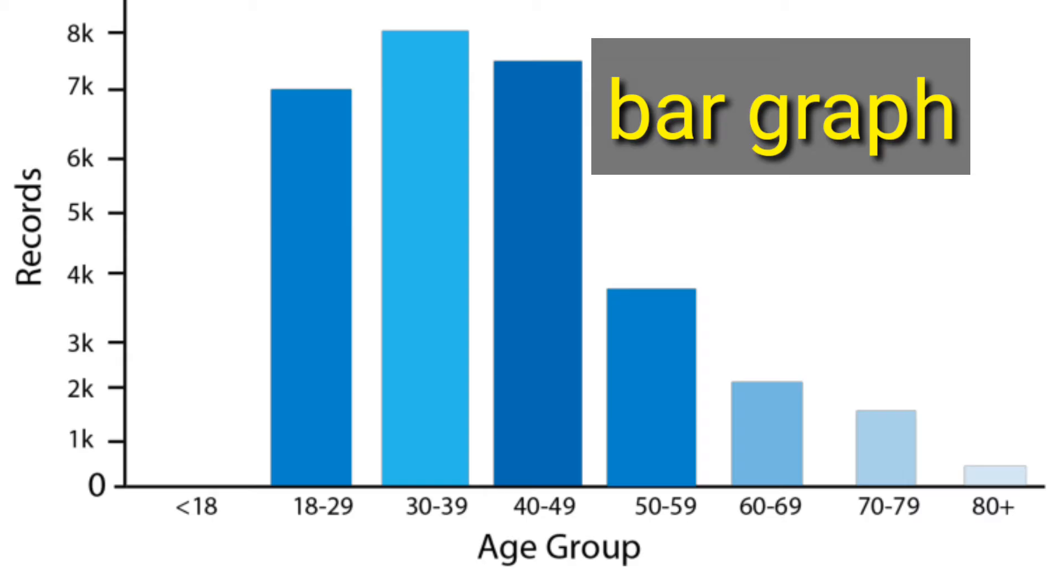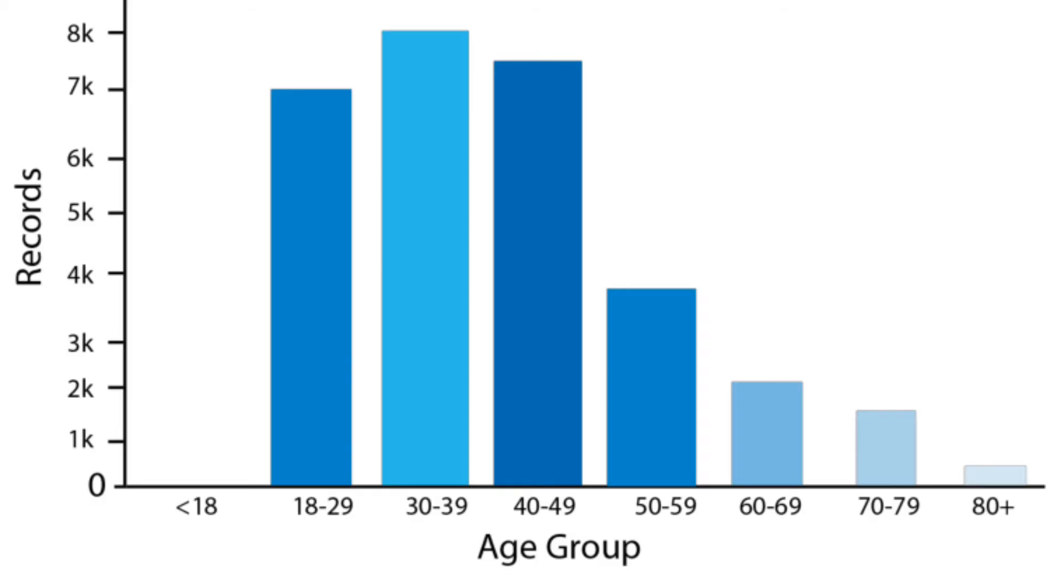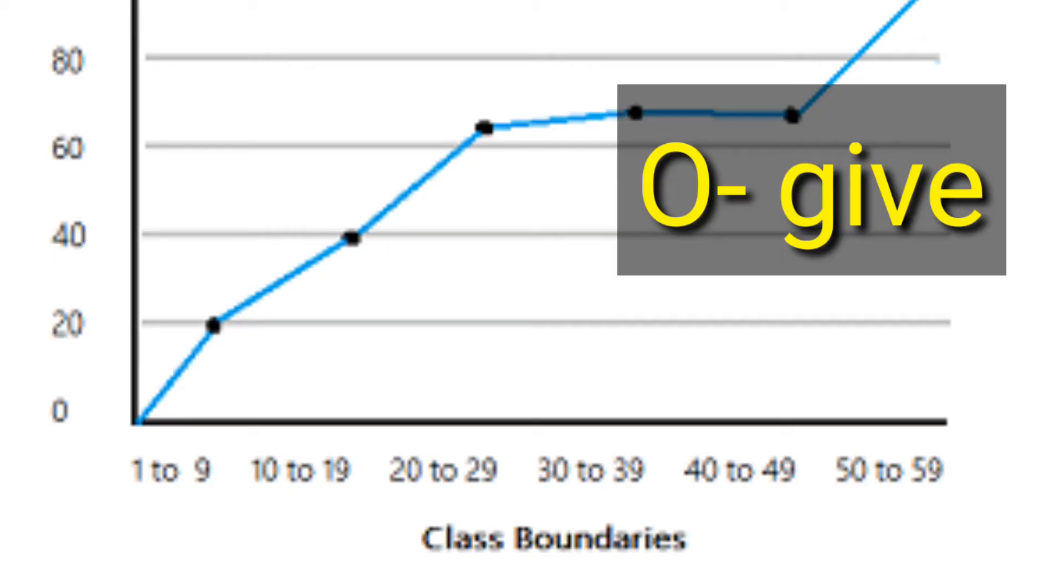Another graph is the bar graph. It also uses class and frequency like the histogram, but the difference is that for the bar graph, the bars are spaced—they are not joined or connected to each other.